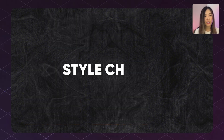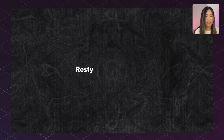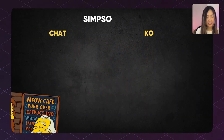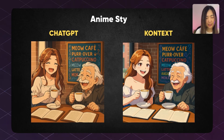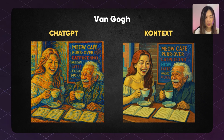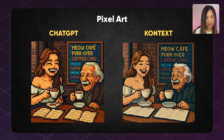We can also change our image into different styles — simply say 'restyle' and then the style name. We tested Simpson style, Studio Ghibli, anime style, Van Gogh style, and pixel art style. ChatGPT understands Van Gogh a lot better than Context.